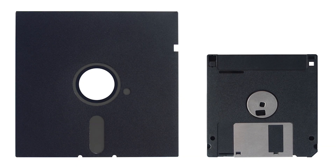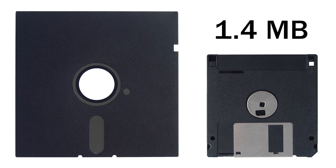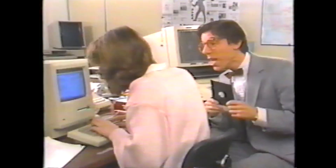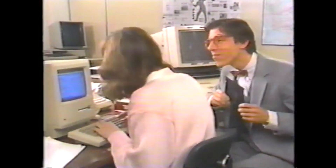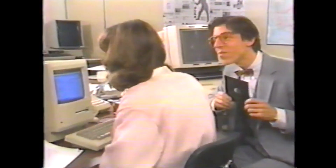Some original equipment manufacturers, or OEMs, chose to ship later versions of Windows 1 on the newer 3.5 inch floppy disks, which could hold approximately double the data of their 5.25 inch counterparts. This required fewer disks overall, meaning fewer resources, plus the added convenience for the user.